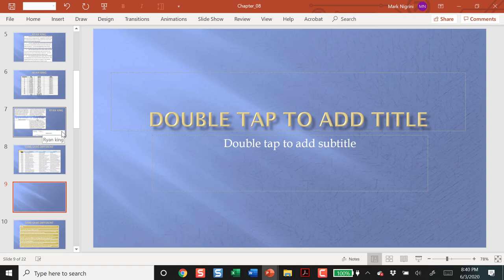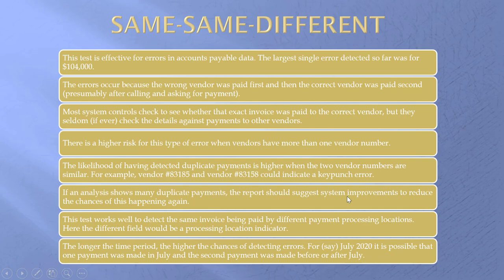This has given good results in accounts payable audits. What we've looked for here is cases where the wrong vendor was paid first and then the correct vendor was paid, presumably after calling for their money. So we pay the wrong vendor, then we pay the correct vendor — which means we are going to have same amount, same invoice number, same date, same everything except different vendors. This picks up that type of error and it is a really nice payback when we find these.